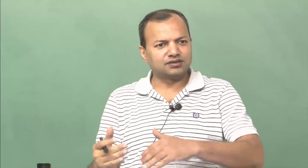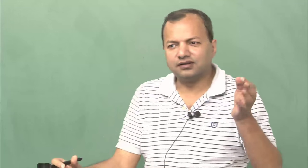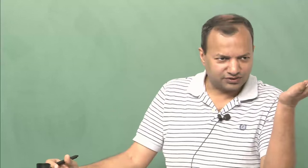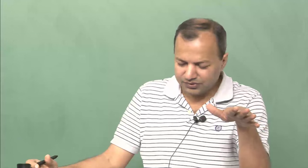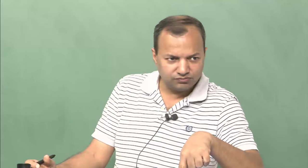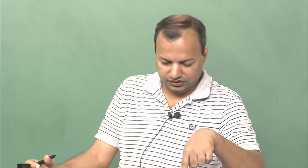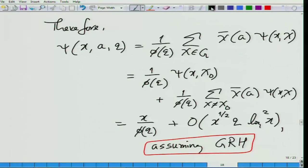And that is it. This is assuming GRH. But using the same technique, the unconditional theorem gives psi of x, a, q equals x over phi of q plus o of 1 times x over phi of q, meaning the error is small o of 1 without any assumption.